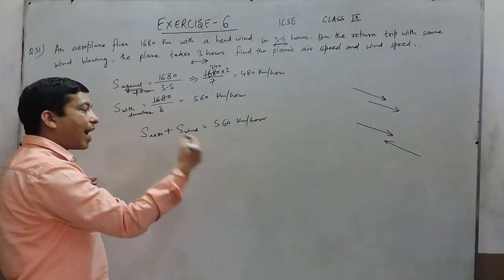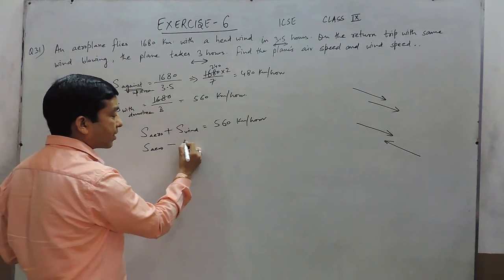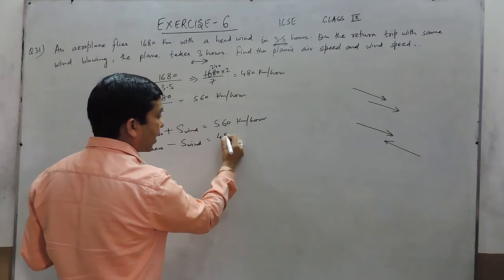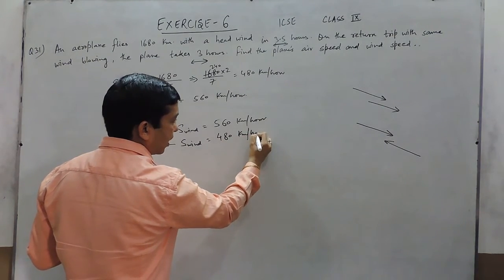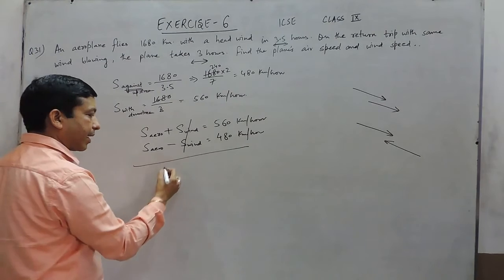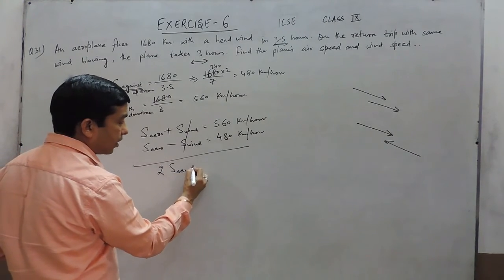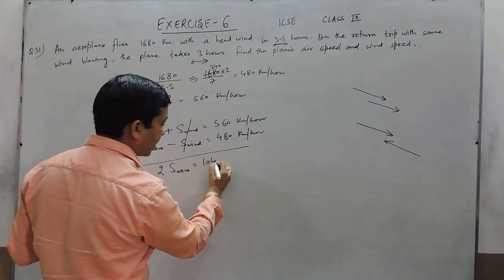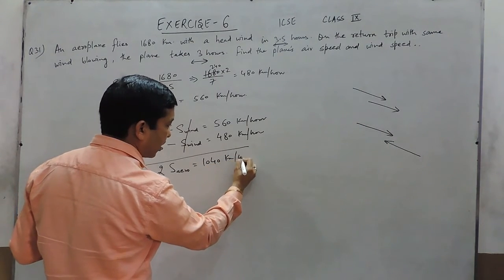When we talk about against the wind, the speed of the aeroplane minus the speed of the wind comes out to be 480 km per hour. If we add these two equations, the wind speed terms cancel, and twice the speed of the aeroplane equals 1040 km per hour.